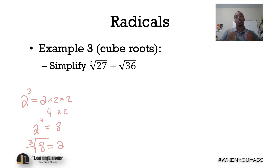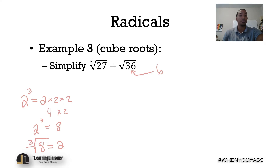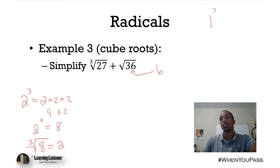Let's apply that to this example: the cubed root of 27 plus the square root of 36. We can replace the square root of 36 with 6. For the cubed root of 27, we ask: what number multiplied by itself three times gives us 27? One cubed is 1, two cubed is 8, three cubed is 3 × 3 × 3 = 9 × 3 = 27. So the cubed root of 27 is 3.